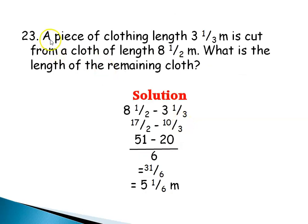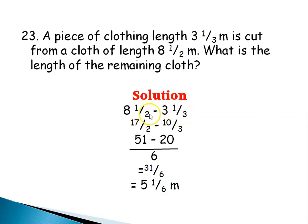Question 63: A piece of clothing of length 3 and 1/3 meters is cut from a cloth of length 8 and 1/2 meters. What is the length of the remaining cloth? I need to subtract 3⅓ from 8½: that is 8½ minus 3⅓. I'll change them to improper fractions: 17/2 minus 10/3.